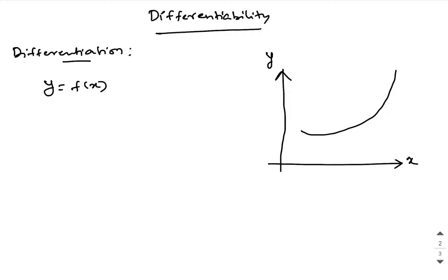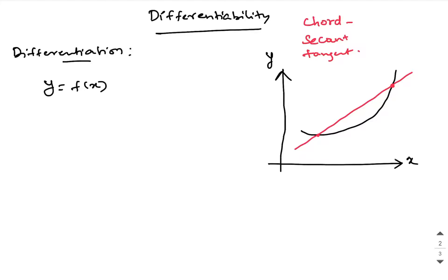To this function, if I draw a secant — there are three lines always associated with any particular curve: one is called a chord, which is a line segment; then you have secant and tangent. A chord is a line segment drawn internal to the curve between two points — both points should lie on the curve. A secant is a line which cuts the curve at more than one point. A tangent is a line which touches the curve only at one point.